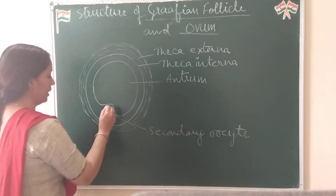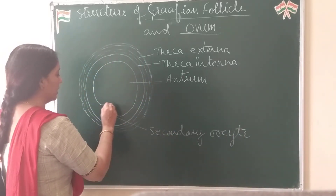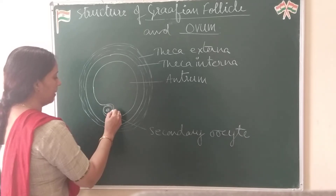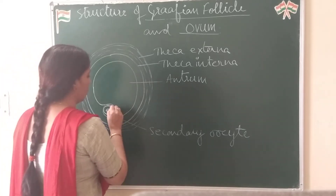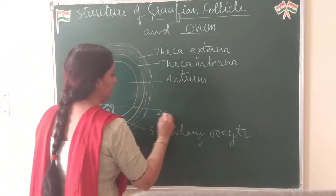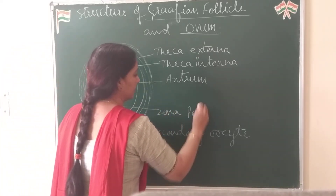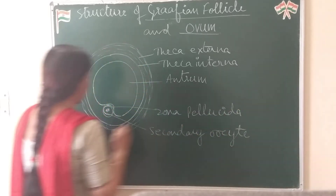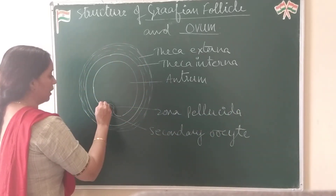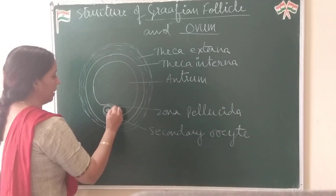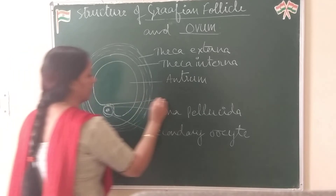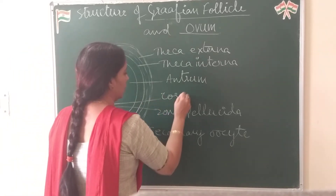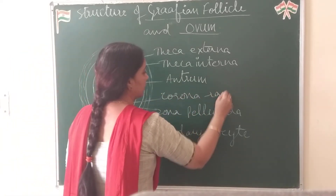This secondary oocyte is surrounded by another membrane called zona pellucida, which is further surrounded by some cells — a cellular membrane called corona radiata.